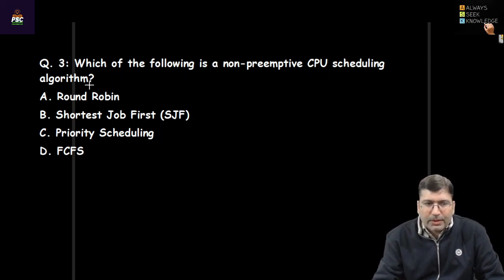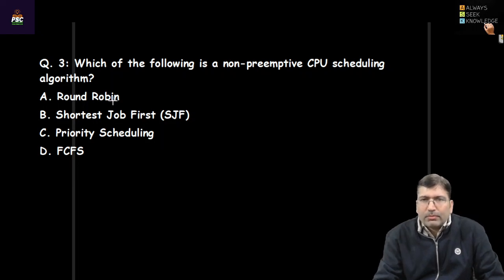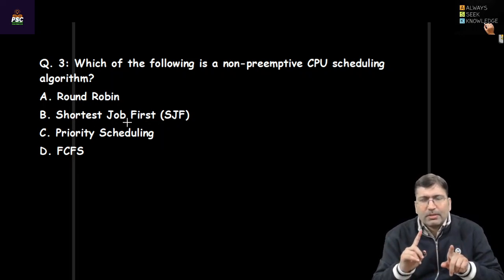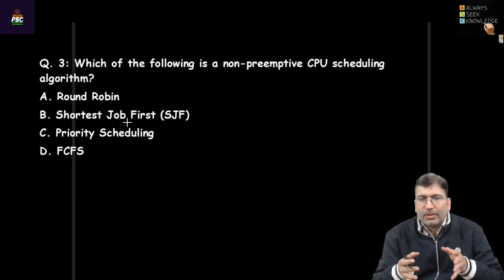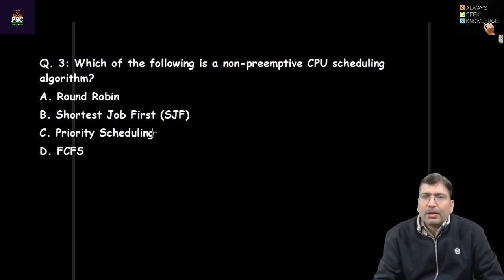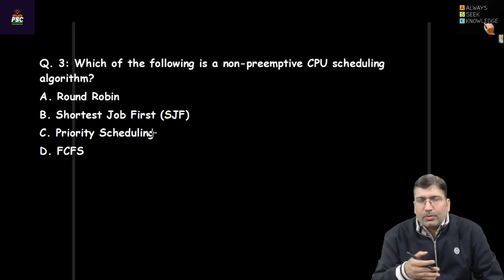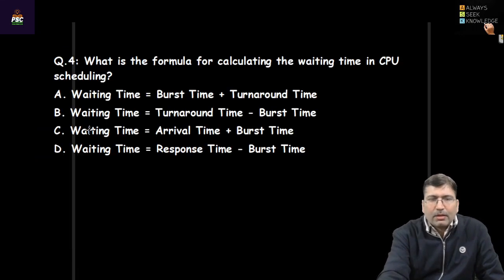Next question: which of the following is a non-preemptive CPU scheduling algorithm? Round Robin is preemptive. Shortest Job First (SJF) has two flavors — non-preemptive and preemptive (also known as Shortest Remaining Time First), so it cannot be said to be purely non-preemptive. Priority scheduling also exists in both forms. The answer is D — First Come First Serve.